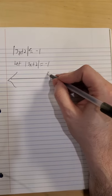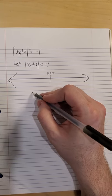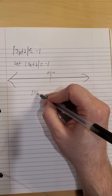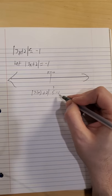So again, I'll just test out x equals 0, see if it works. Absolute value of 3 times 0 plus 2, possibly less than or equal to negative 1.